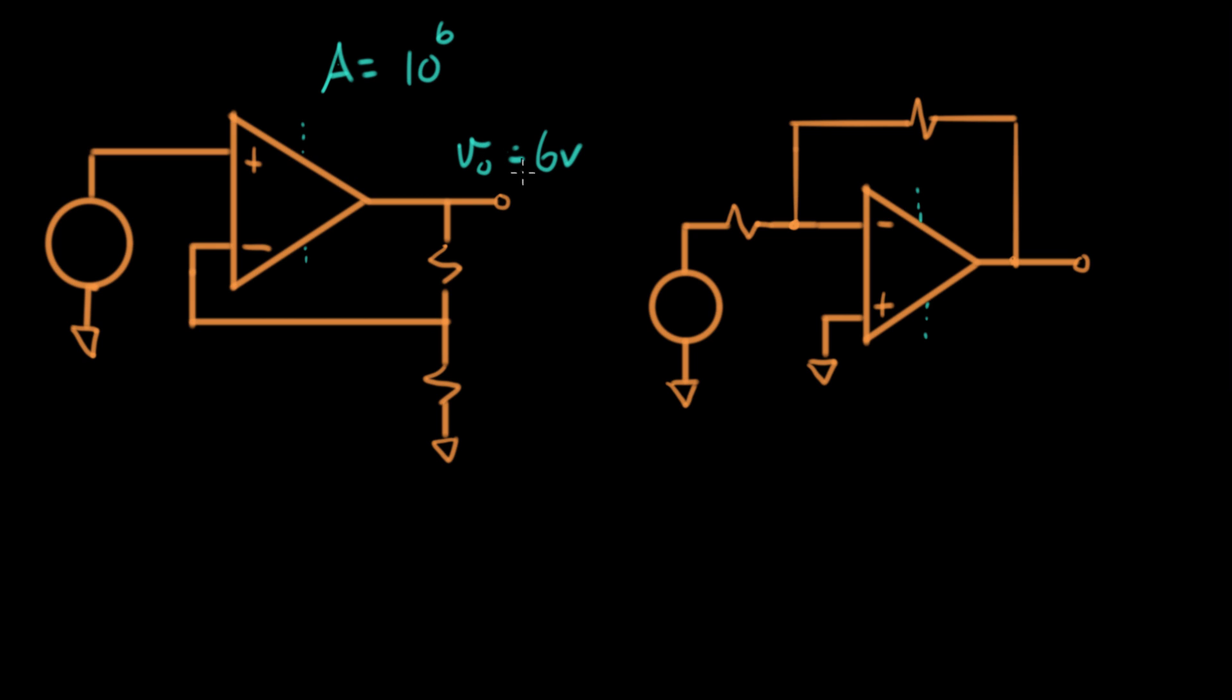All right, now, if Vout is six volts and A is 10 to the sixth, then what's Vin? Vin is the difference between these two voltages here. Let's call this the usual thing. We'll call this Vplus, and we'll call this Vminus.